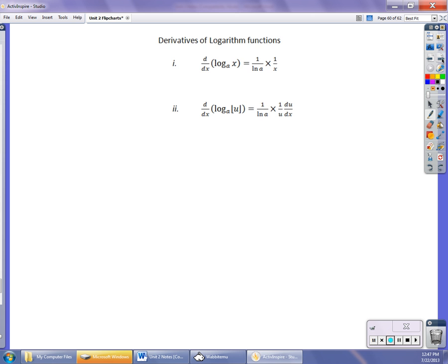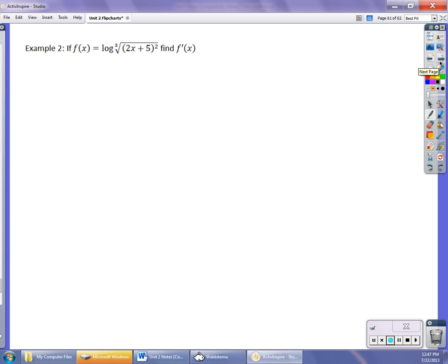A couple examples of that. First, I would pull 2/3 out front. I'd write it as log of (2x+5) raised to the 2/3 power—2/3 because of the cube root and then the squared. I'd bring that 2/3 out front. So before finding the derivative, I'd write it as 2/3 log₁₀(2x+5).